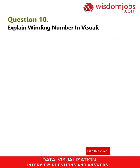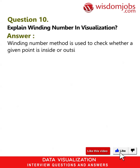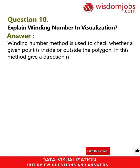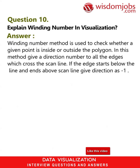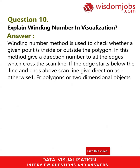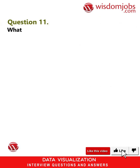Question 10: Explain the winding number in visualization. Answer: The winding number method is used to check whether a given point is inside or outside a polygon. In this method, a direction number is given to all edges which cross the scan line. If the edge starts below the line and ends above the scan line, the direction is given as minus one, otherwise one. For polygons or two-dimensional objects, the point is considered inside when the winding number value is non-zero.